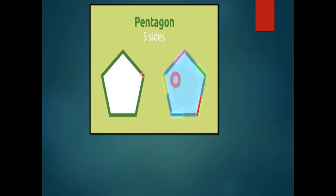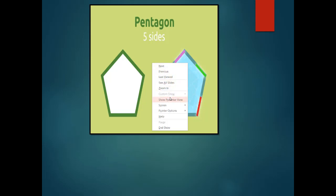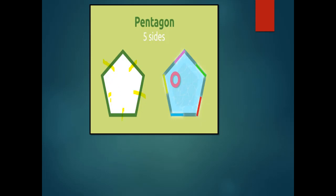If the polygon has five sides — don't forget, five sides: one, two, three, four, five — we call it a pentagon. Like the Pentagon building, which has five sides. Five sides — we call it a pentagon.